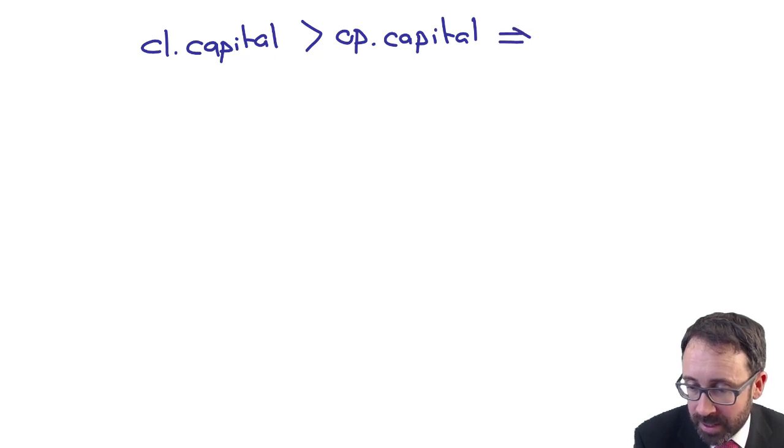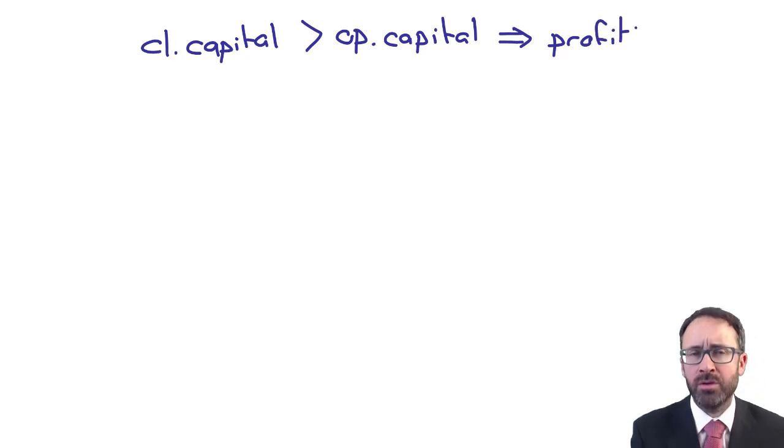So using the measurement bases that we've seen in the previous sections, then after the distribution that you've made to the shareholders, then you will have made a profit. And effectively that's the accounting equation isn't it?